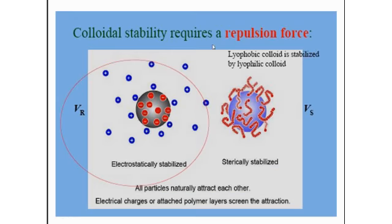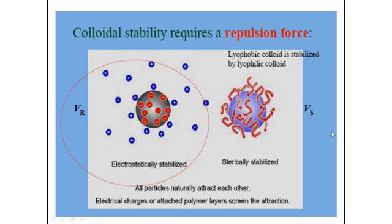Colloidal stability requires repulsion forces. In an electrostatically stabilized colloid, the particles attain charges on their surfaces — for example, negative charges — so that similarly charged molecules will repel each other. The positive counter-ions remain in the dispersion medium but, as molecular ions, they play no role in coagulation. Additionally, a lyophobic colloid can sometimes be stabilized by adding a lyophilic colloid; the lyophilic colloid molecules may act as a polymer, carrying charges that help in the process of repulsion.